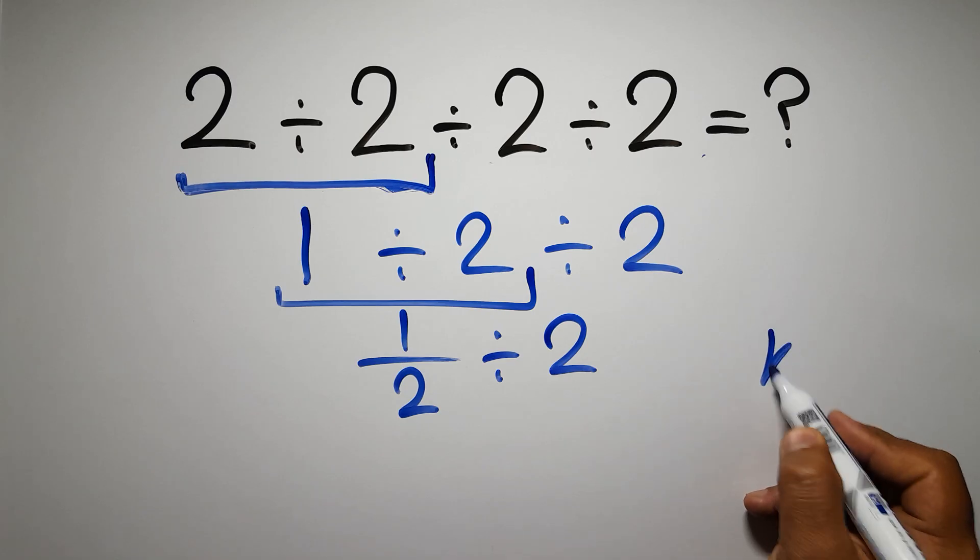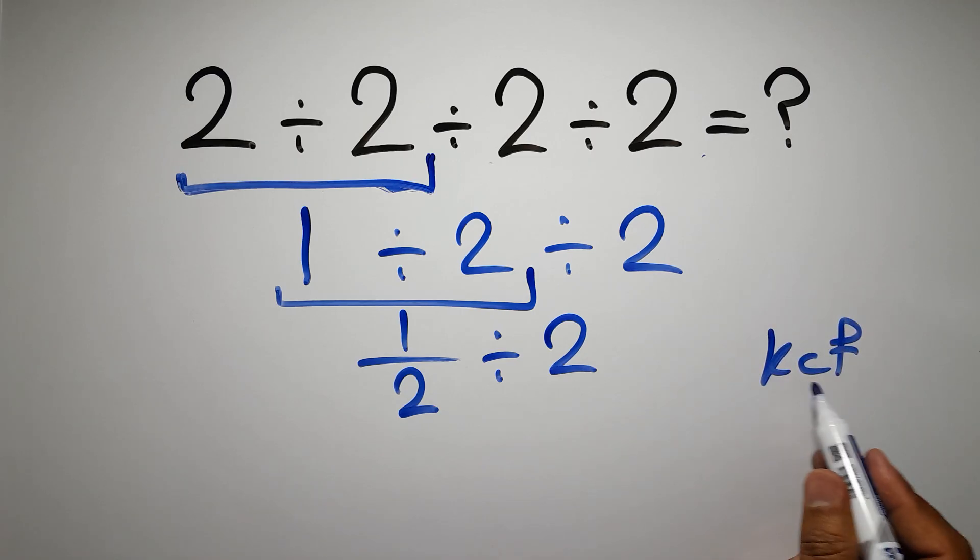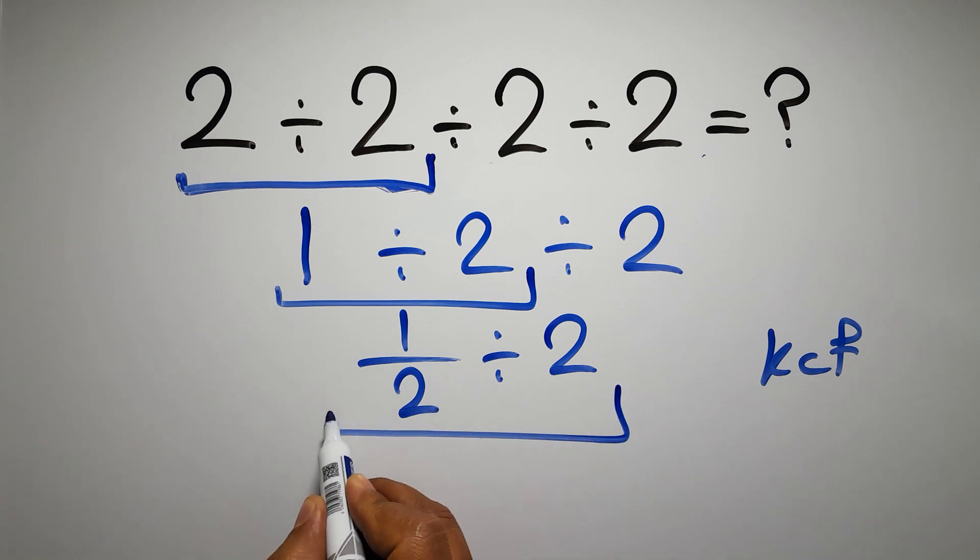Now according to the KCF rule, K stands for keep, C stands for change, and F stands for flip. We can write keep the first fraction, change division to multiplication, and flip the second fraction.